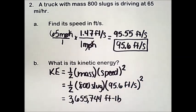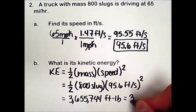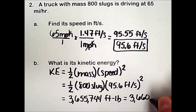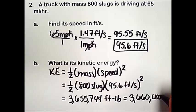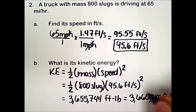But again, we want to round this to three significant digits. So we're going to round this to the ten-thousands place. So that will be 3,660,000 foot-pounds.